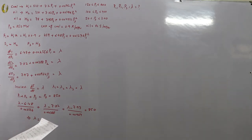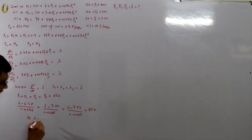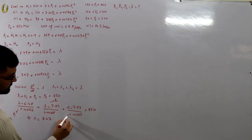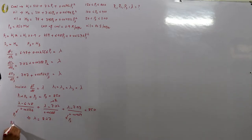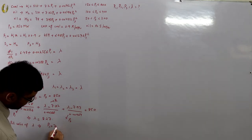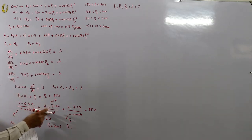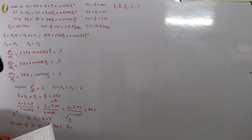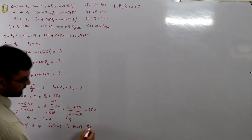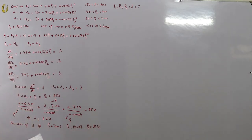Solving, λ = 8.27. Substituting back: p1 = 700.3 MW, p2 = 115.97 MW, p3 = 31.12 MW.